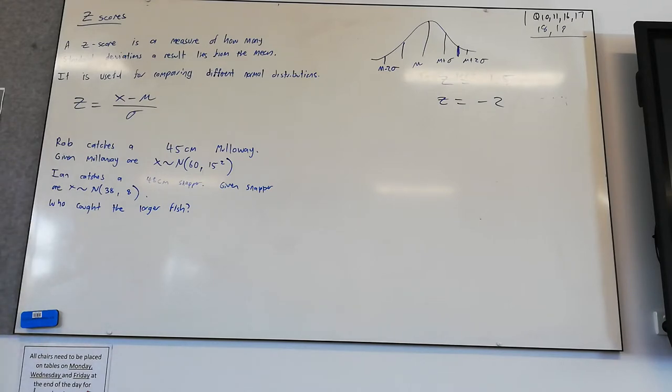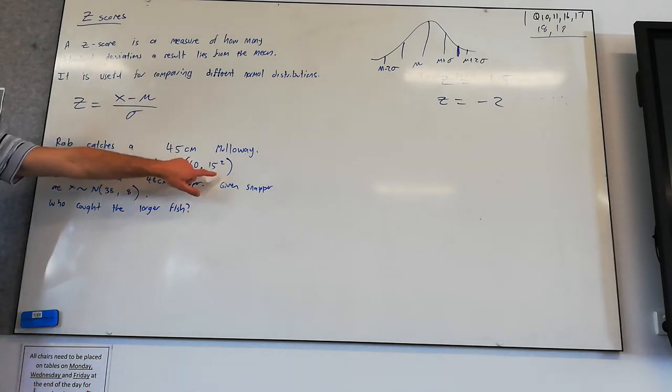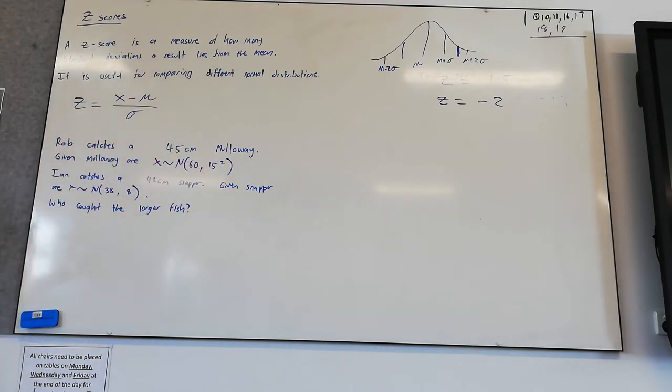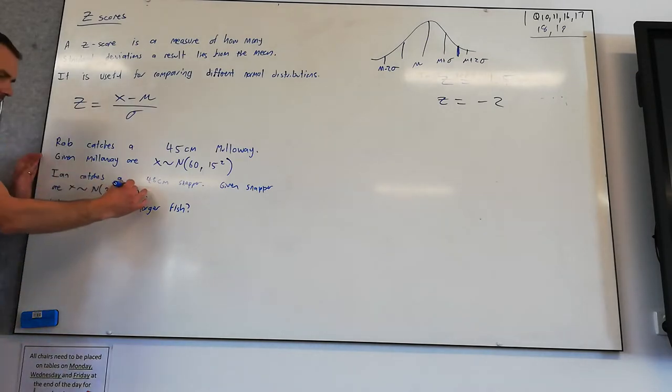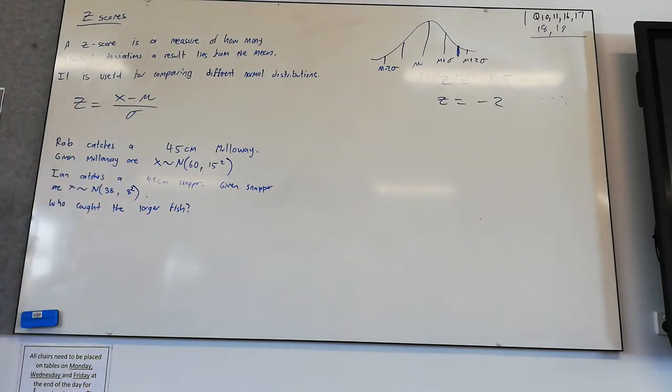Rob catches a 45cm mulloway and mulloway are normally distributed with a mean of 60cm and a standard deviation of 15. Ian catches a 48cm snapper and snapper are normally distributed with a mean of 38cm and a standard deviation of 8. Who caught the larger fish? So this is what it's useful for, comparing two different distributions.